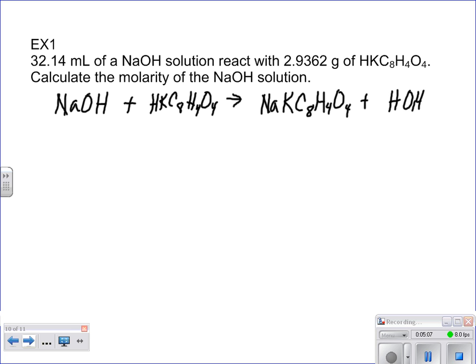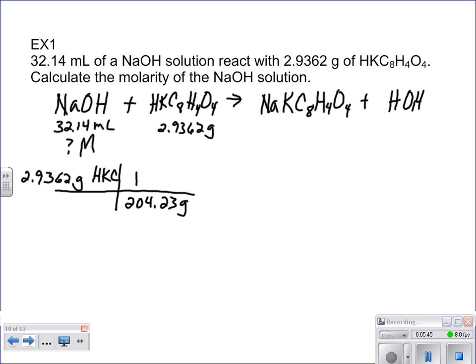Then we can write down information below it that it gives us in the problem. Here we know we start with 32.14 milliliters, and we are looking for the concentration. And we know that we're also starting with 2.9362 grams of our acid. So whenever you're given grams of a compound, you know that you can take that. We know that we can take that and calculate the moles of that. So quickly, I add that up in my head, and I get that many grams per mole. So now, by doing that, I get 0.01438 moles, roughly, of our HKC.